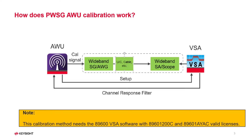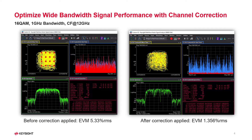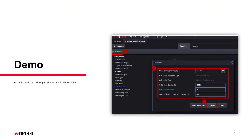You need to pay attention that this calibration method requires the VSA software with a valid license. Channel correction has significant impacts on the measurement results of wide bandwidth signal generation. As shown in the diagram, the generated response filter file applied to the waveform improves EVM significantly from 5.33% to 1.356%.